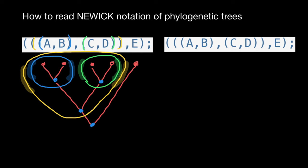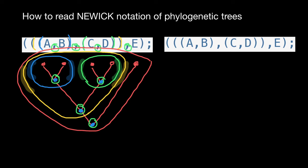This comma stands for this node here; this comma stands for this node here; this comma stands for this node here; and this comma stands for this node here. Species E is the outgroup. We can also join them into an even bigger monophyletic group, and this parenthesis here stands for this biggest circle, so we can add this parenthesis here.